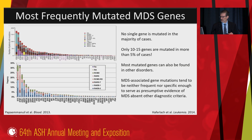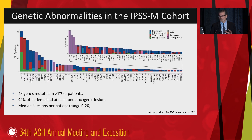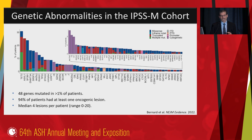Let's start with the landscape of MDS mutations. We've known for many years that there are multiple genes recurrently mutated in MDS. No single gene is found in the majority of patients, but there are a large number of genes mutated recurrently at greater than one or two percent that have important prognostic significance and perhaps significance for choosing therapies. This is borne out by the IPSSM data: 48 genes were present in at least one percent of patients, 94 percent of patients had a somatic mutation or oncogenic lesion identified, and most patients had multiple mutations.